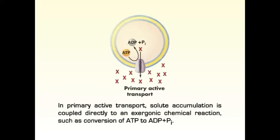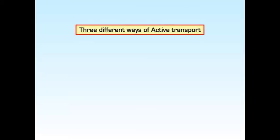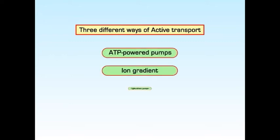In primary active transport, solute accumulation is coupled directly to an exergonic chemical reaction, such as conversion of ATP to ADP and phosphate. Secondary active transport occurs when endergonic or uphill transport of one solute is coupled to the exergonic or downhill flow of a different solute that was originally pumped uphill by primary active transport. Active transport takes place in three different ways: by ATP-powered pumps, ion gradient-driven pumps, or light-driven pumps.